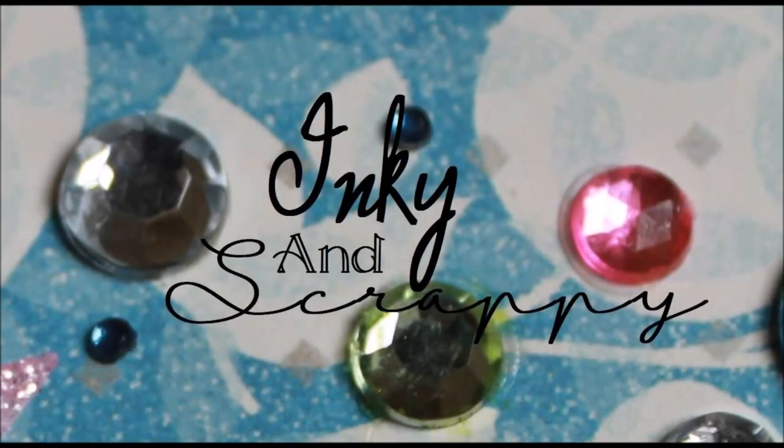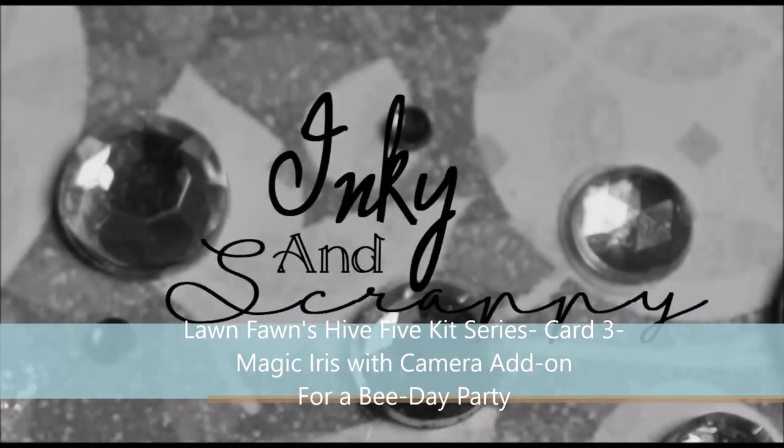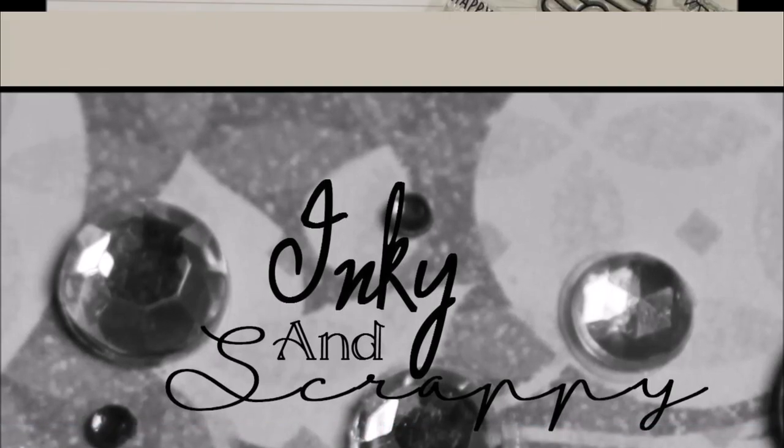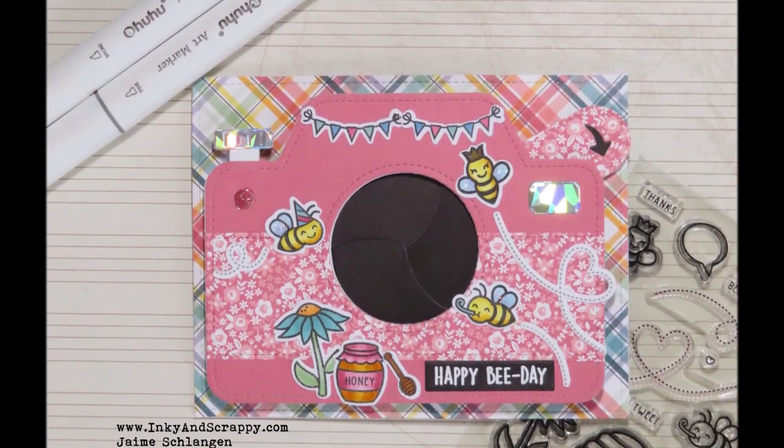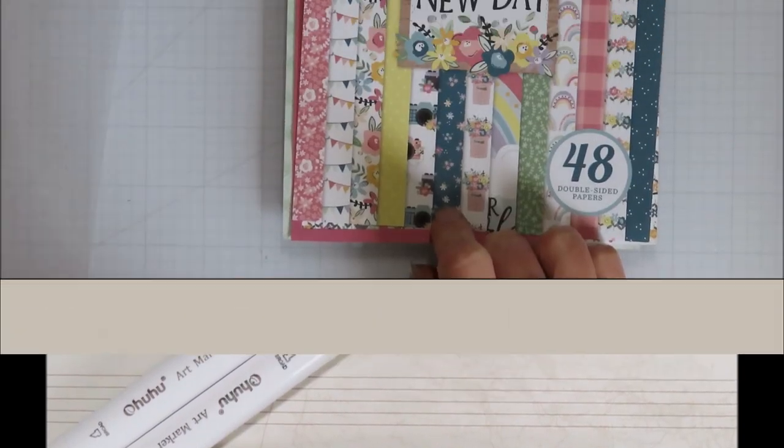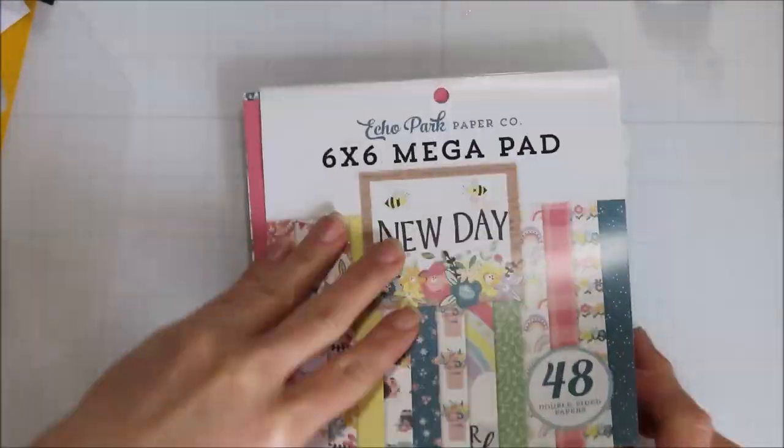Hello, Jamie here from Inky and Scrappy, sharing with you today card three in my card series featuring the Lawn Fawn's Hive 5 kit and the Magic Iris, and of course, that camera add-on.